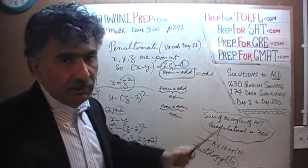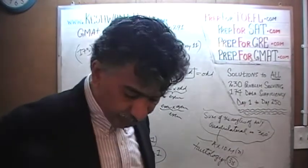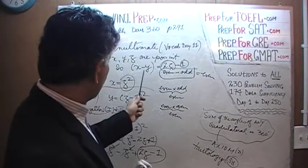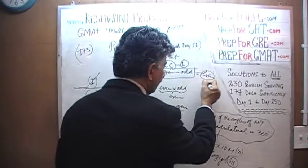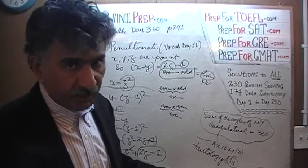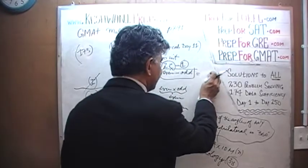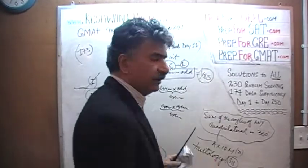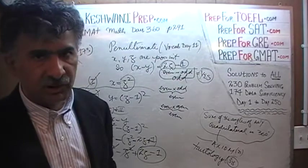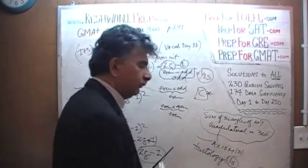Even if the result had turned out to be even, the answer to this problem would still have been C, because we are able to tell definitively — either yes or no. It's just a coincidence that the answer here turns out to be an affirmative one: yes, it is odd. Even minus odd is odd. Putting the two statements together does the job very nicely. The answer to this question is C.